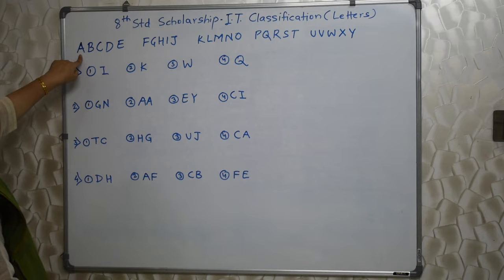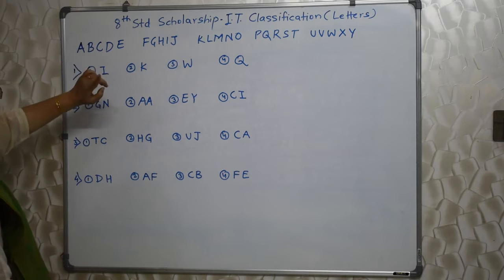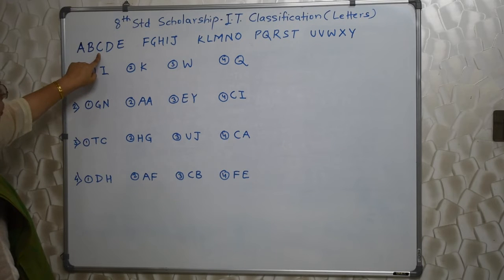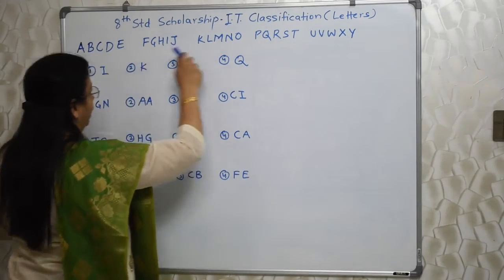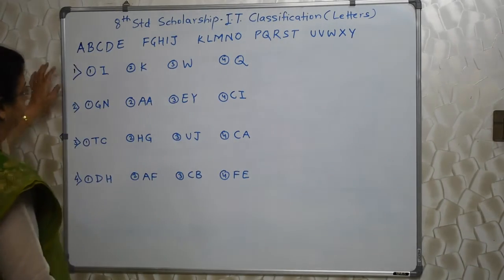You have to assign 1-1 number to this. A is 1, B is 2, C is 3, like that. Up to Y, 25. There are 25 letters like that, grouped in 5-5.